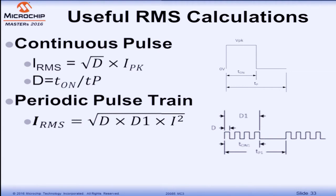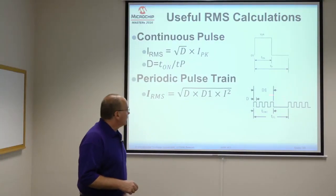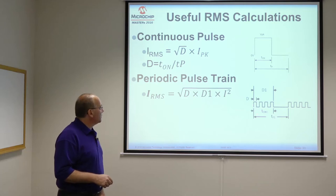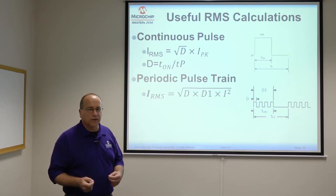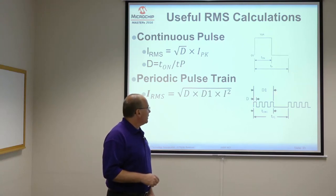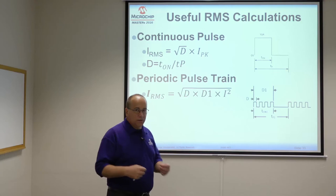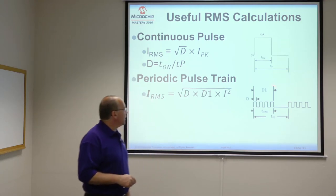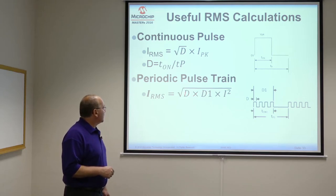For a continuous pulse, RMS current equals the square root of the duty cycle times the peak. But for a periodic pulse train — such as PWM speed control for a three-phase motor where one winding is off for a period — you can look at this in terms of two duty cycles. One is the PWM duty cycle (on time versus switching period). The other is the operation time versus the period of the electrical rotation. Once you calculate these two, you can calculate RMS current using the combined formula.